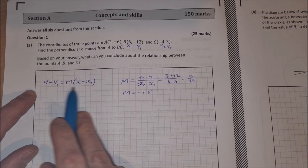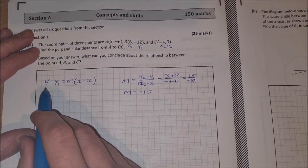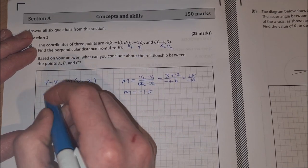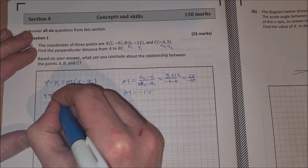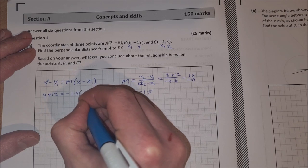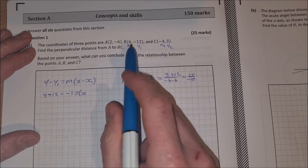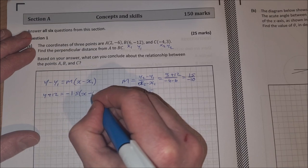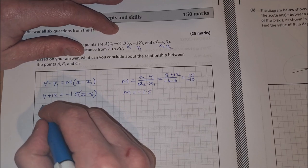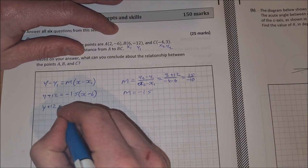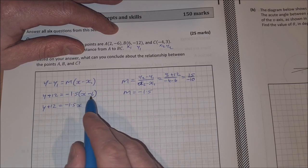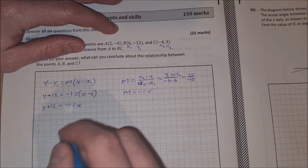Now we can find the equation of this line, so y minus y1, that's y minus -12, so y plus 12, equals m, which was -1.5, times x minus x1. x1 is 6, so that's x minus 6. Now just work out this brackets here, so we have y plus 12 is equal to -1.5x, and then -1.5 by -6 is plus 9.